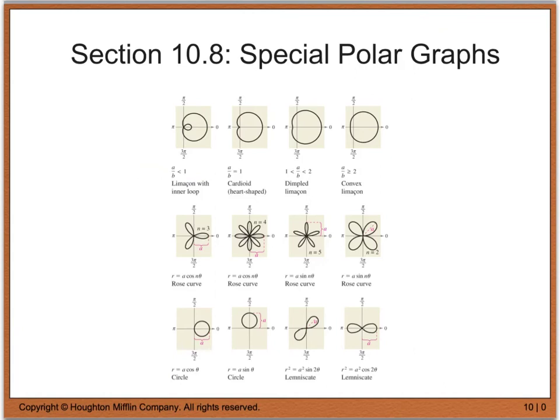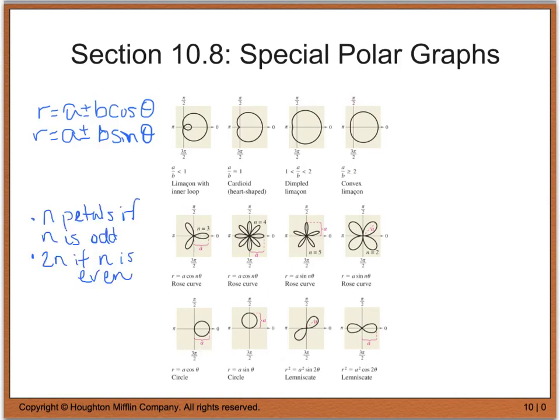Now the next thing we're going to look at are special polar graphs. This list of graphs can be found on page 789 of your textbook. You are not required to memorize them. However, there's a few things I would like you to make note of. The first type is called a limaçon. The general formula for those are going to be a plus or minus b cosine theta, or a plus or minus b sine theta. And you can see that these are the different scenarios right here that would give you the different types of limaçons. For the rose curves, which are found in the middle section here, the number of petals, which each loop is considered a petal, you have n petals if n is an odd number. If n is an even number, you'll have two times that number, or twice as many petals.